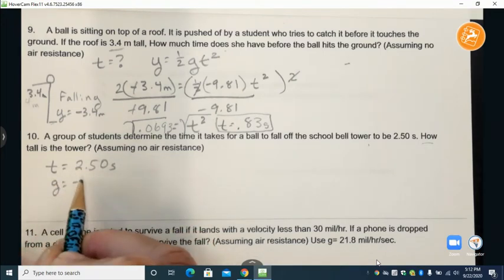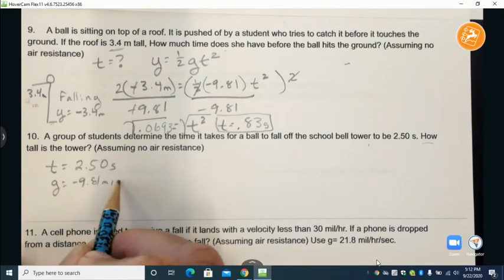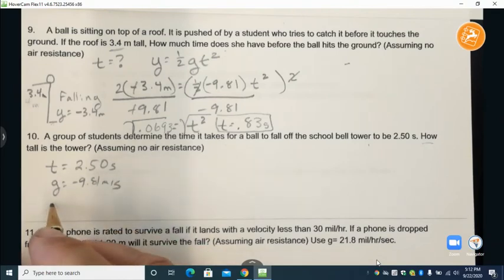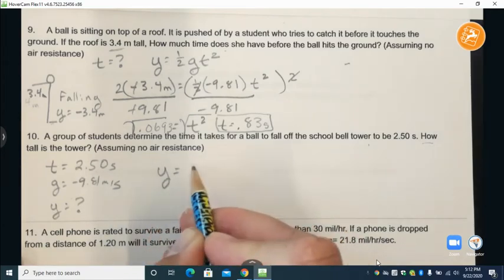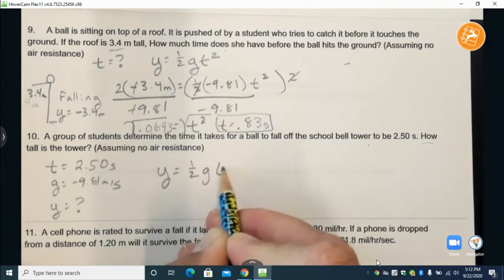We know gravity is negative 9.81 meters per second squared and we want to find y equals question mark. So y equals one-half g t squared.